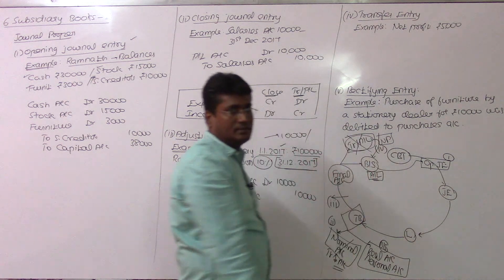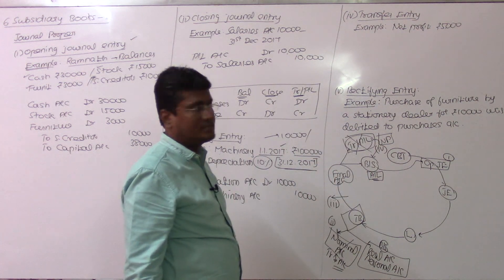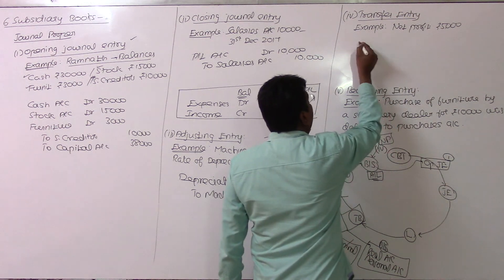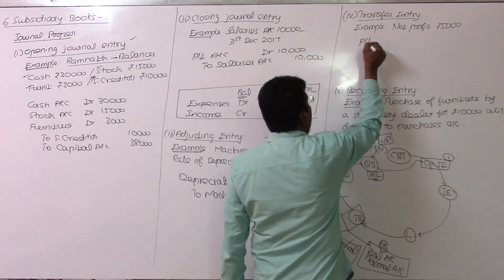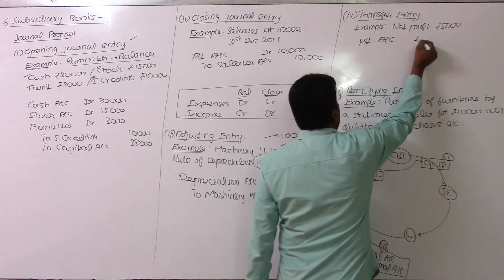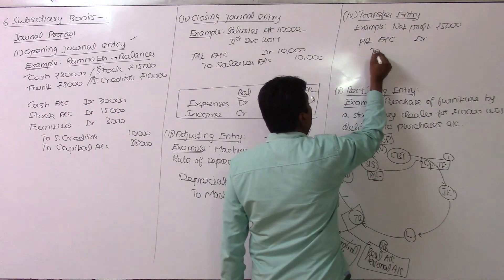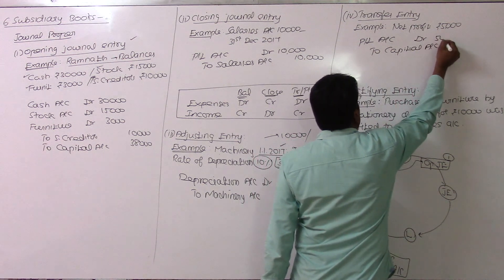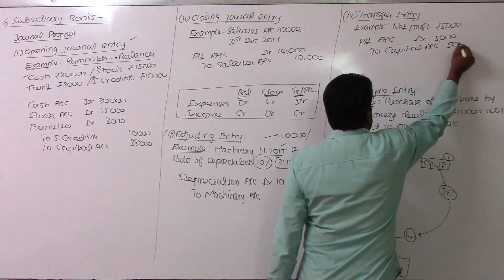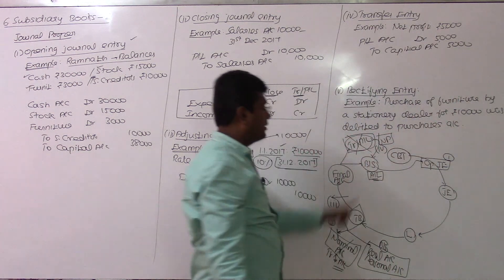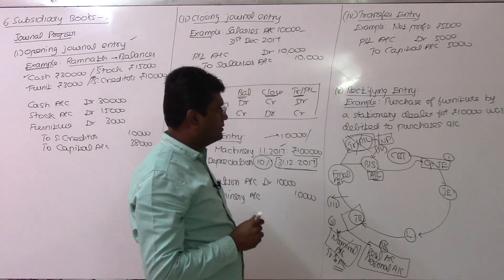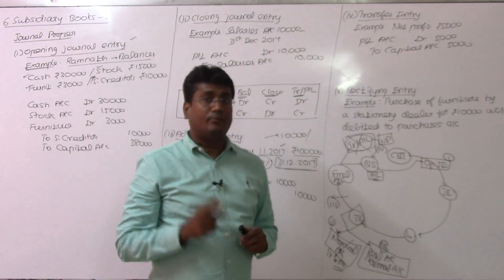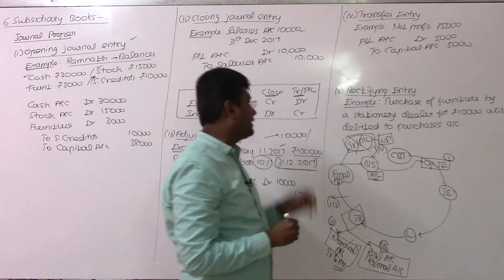This is the fourth block. In the transfer entry, net profit is debited in the Profit and Loss Account, and the owner's Capital Account is credited. So I am crediting the owner's capital account. This is the fourth block.